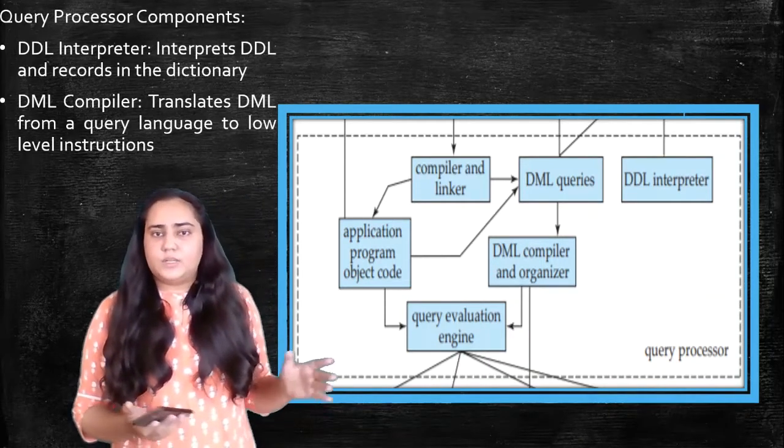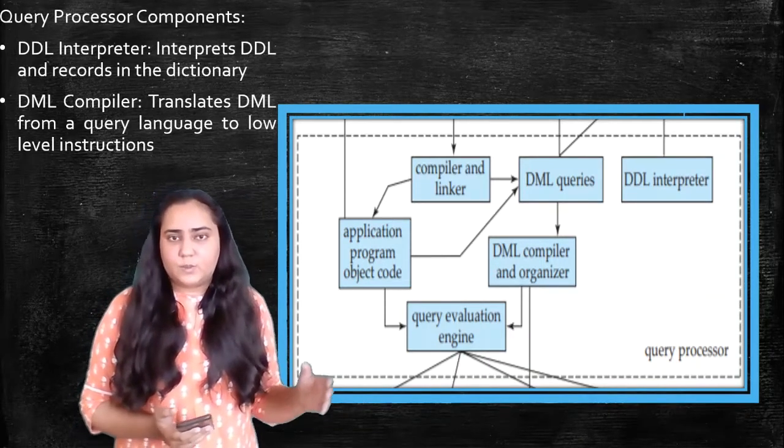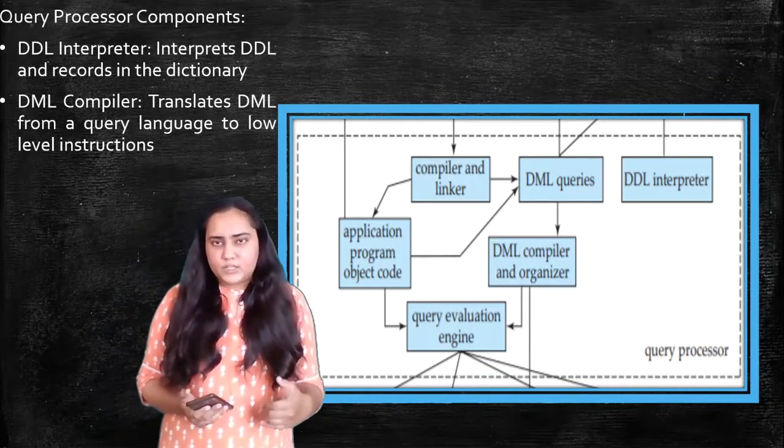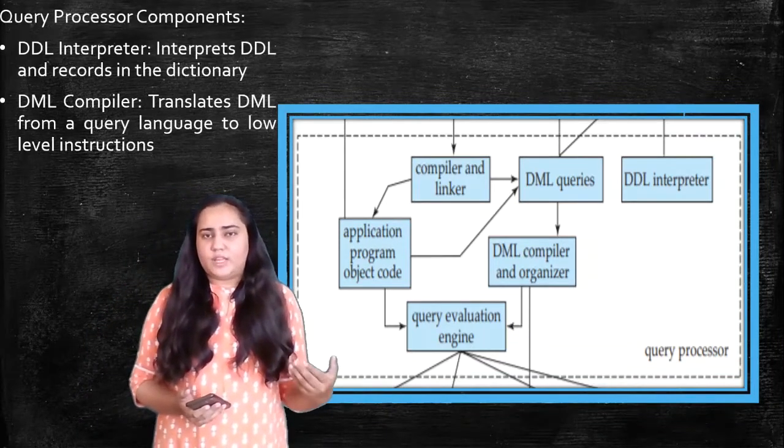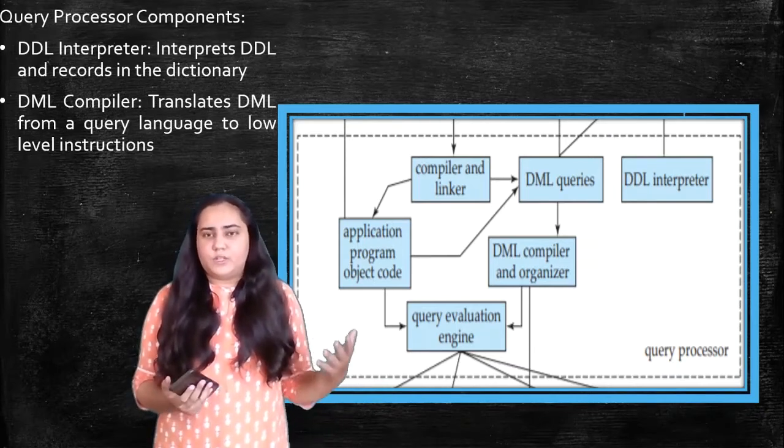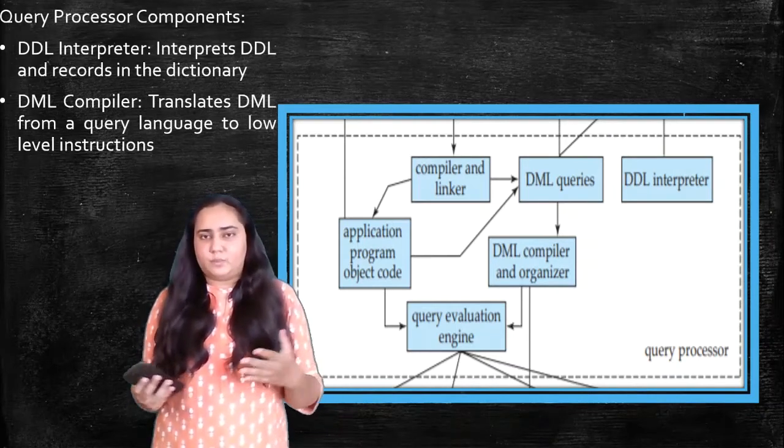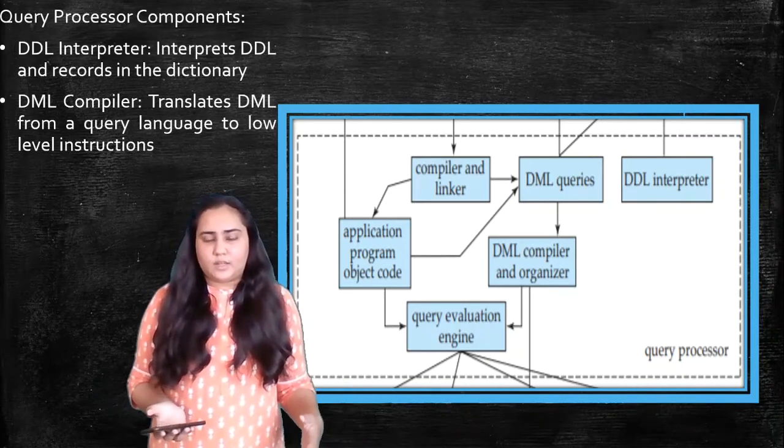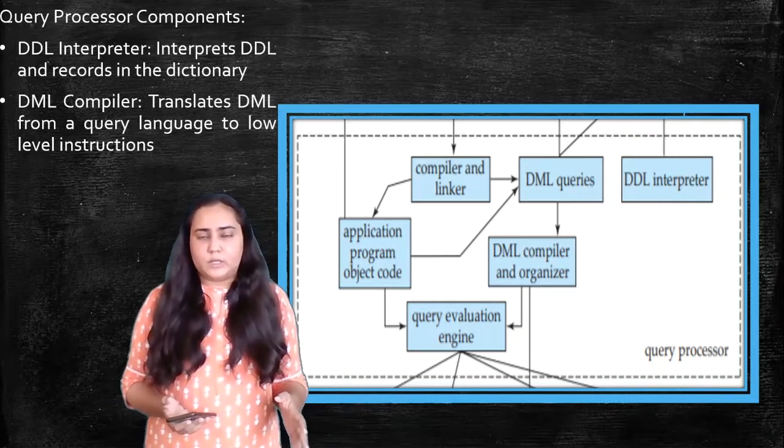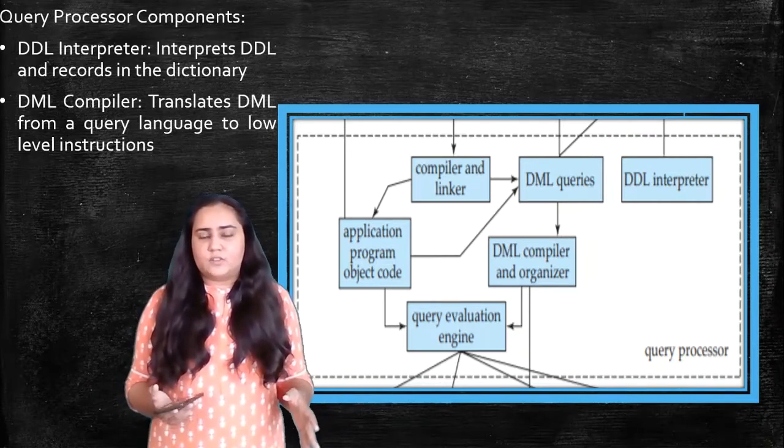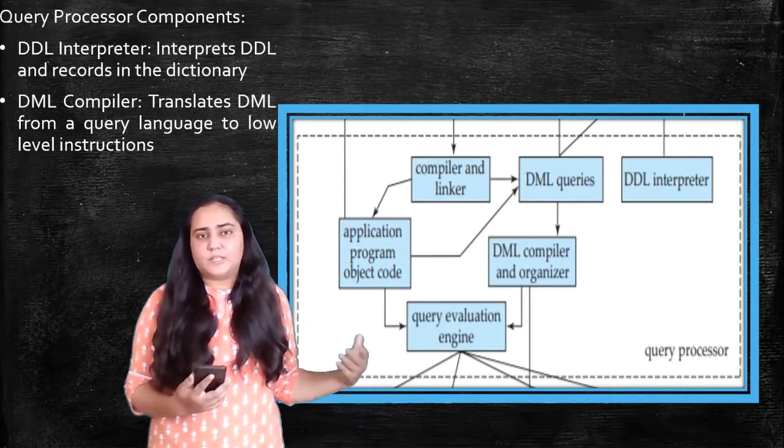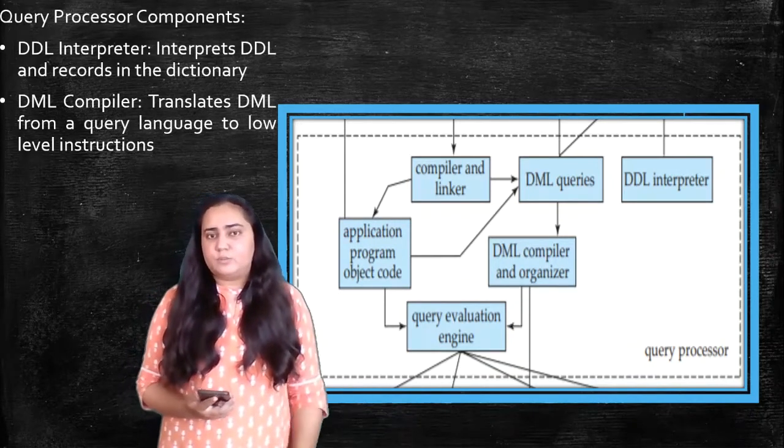Now you need to understand at this point the difference between a compiler and an interpreter. So an interpreter works more like an on-the-spot translator. If you're watching something on television where there's a person speaking a foreign language which people do not understand, and so there's a translator present who translates at that moment whatever the person is speaking. So it is happening simultaneously. That's what the interpreter does.